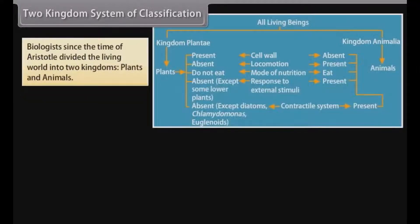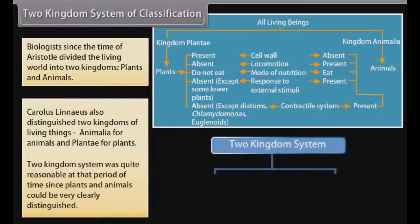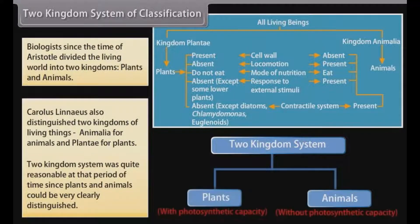Biologists since the time of Aristotle divided the living world into 2 kingdoms. Carolus Linnaeus also distinguished two kingdoms of living things: Animalia for animals and Plantae for plants. The two kingdom system was quite reasonable at that period of time, since plants and animals could be very clearly distinguished.